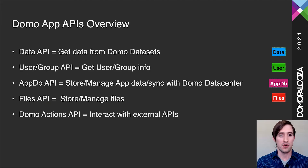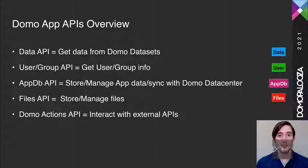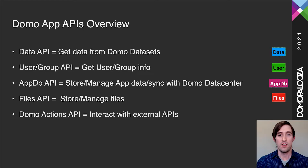Let's take a brief look at the Domo app APIs available to us. Starting with the Data API — this is about getting data that's already in Domo. Anytime you build a normal Domo card, you're already selecting a dataset to power your visualization, and the Data API provides exactly that for custom apps. Moving on to the User and Group API, this lets you get information, avatars, and groups that a given user is in.